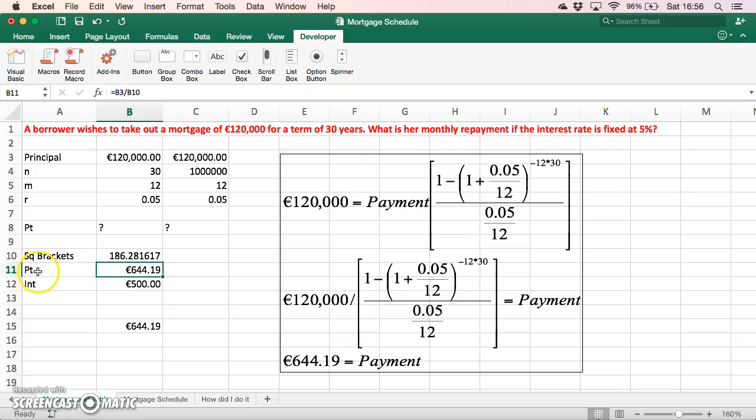To discover the monthly payment, the payment equals €644 because if we take the principal of €120,000 divided by the square brackets, that equals €644. What proportion of that is the current interest? After the first payment is made, if we look at interest only...